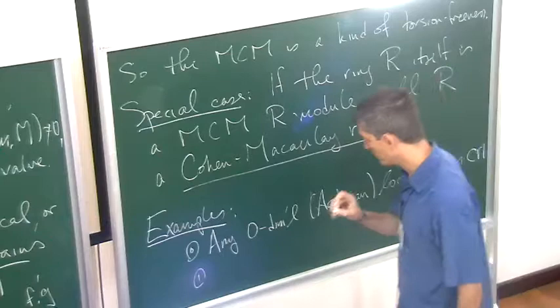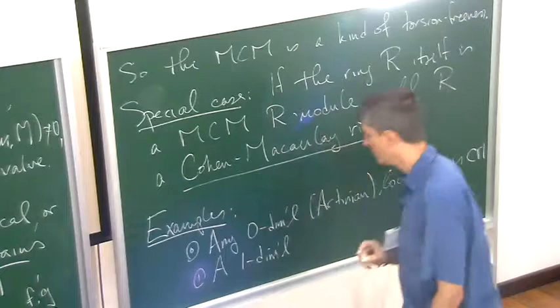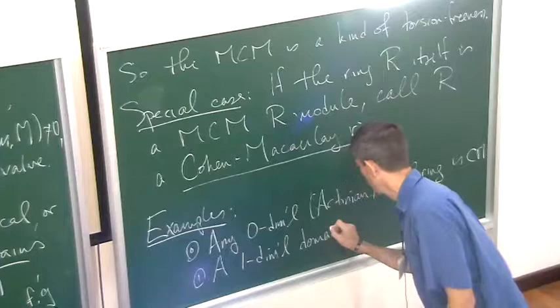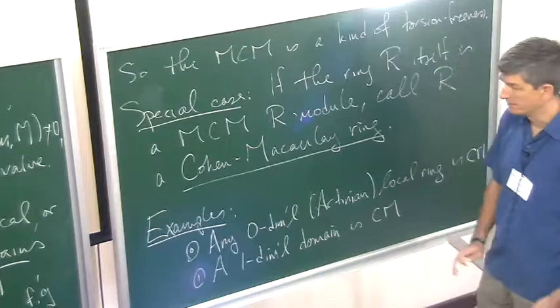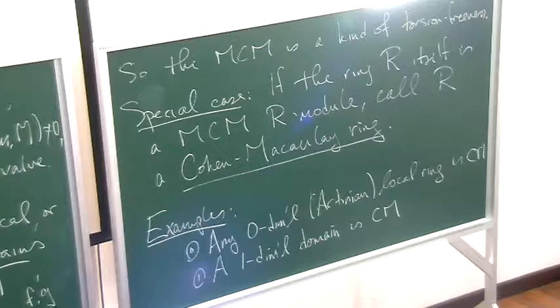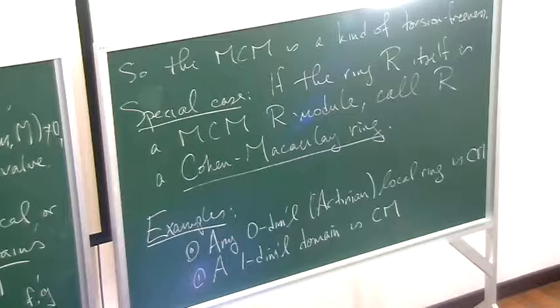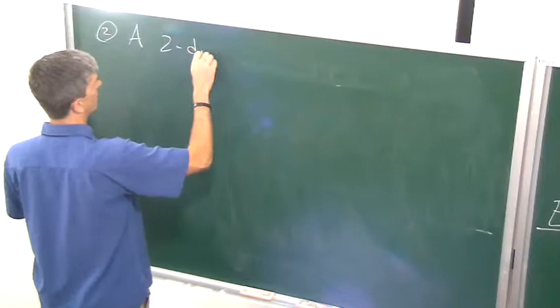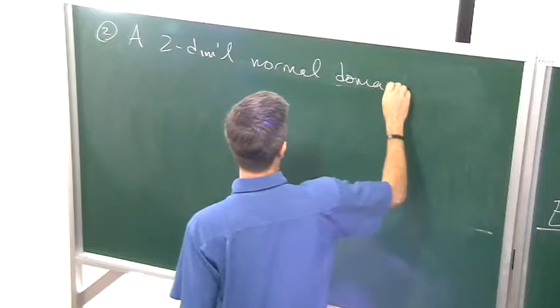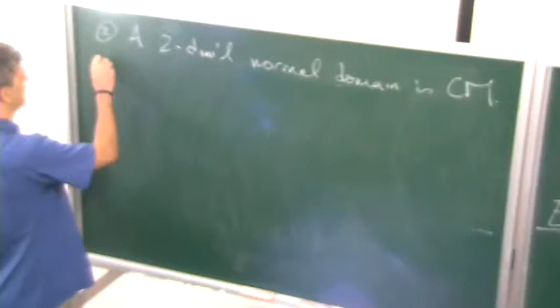A one-dimensional... Not all one-dimensional rings are Cohen-Macaulay, but any one-dimensional domain. So this means, for example, the coordinate ring of an irreducible curve is Cohen-Macaulay. Up one more step. In dimension two, again not every two-dimensional ring is Cohen-Macaulay, but a normal domain is always Cohen-Macaulay in dimension two. So as you see, these are getting a little rarer as we go up, but still quite a mild assumption.